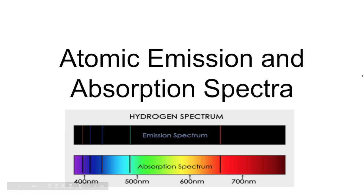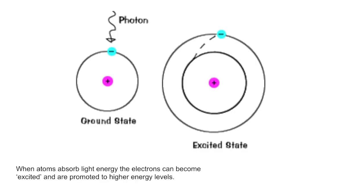In this video I'm going to talk about Atomic Emission and Absorption Spectra, which is part of the Advanced Higher Chemistry course. In Higher and National 5 Chemistry, you would have learned about the structure of the atom, that electrons are in energy levels, and each element has its own electron arrangement. Now we're going to look at these electrons actually moving between energy levels.